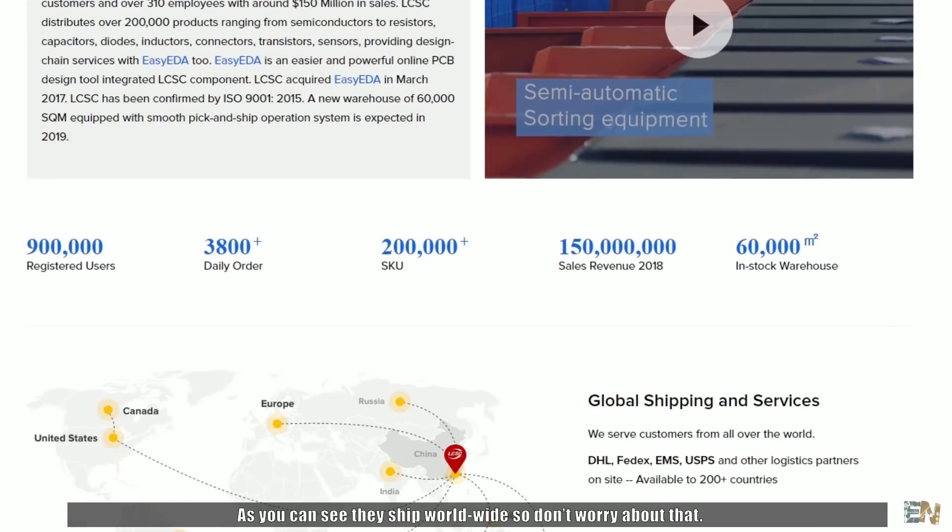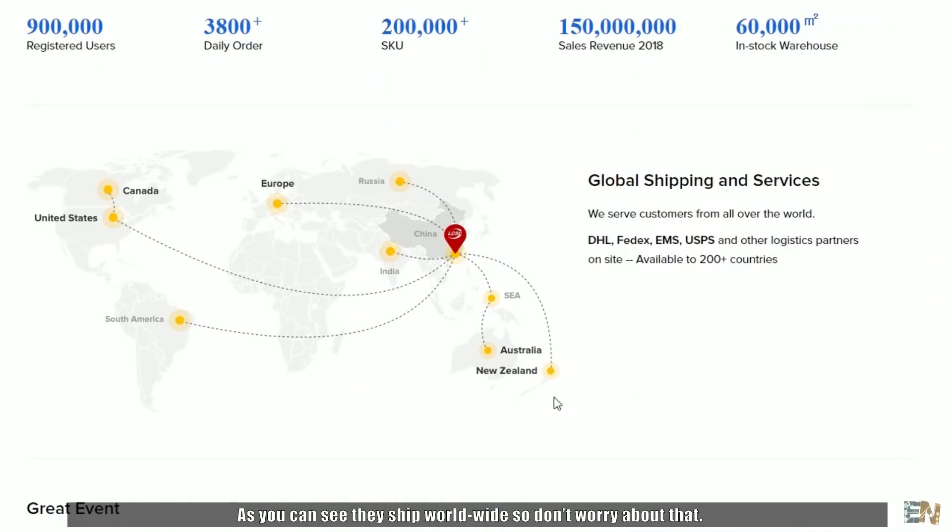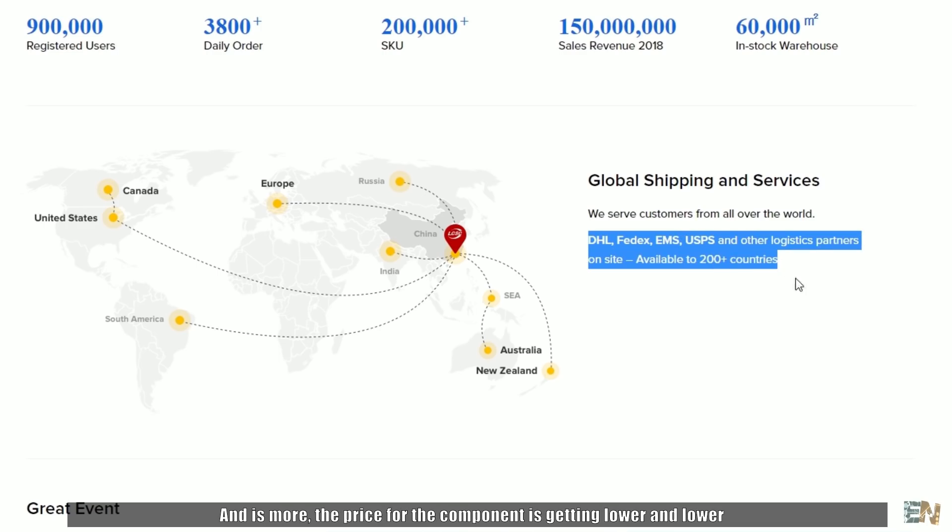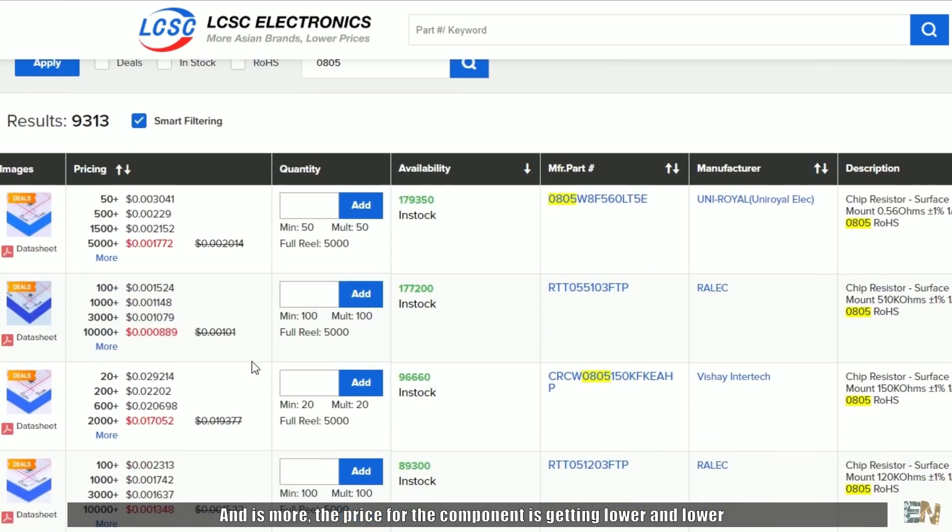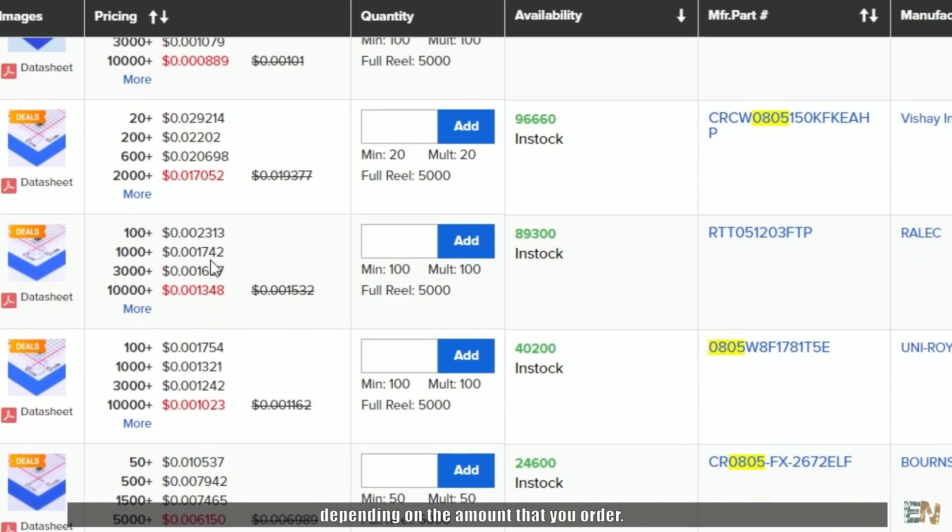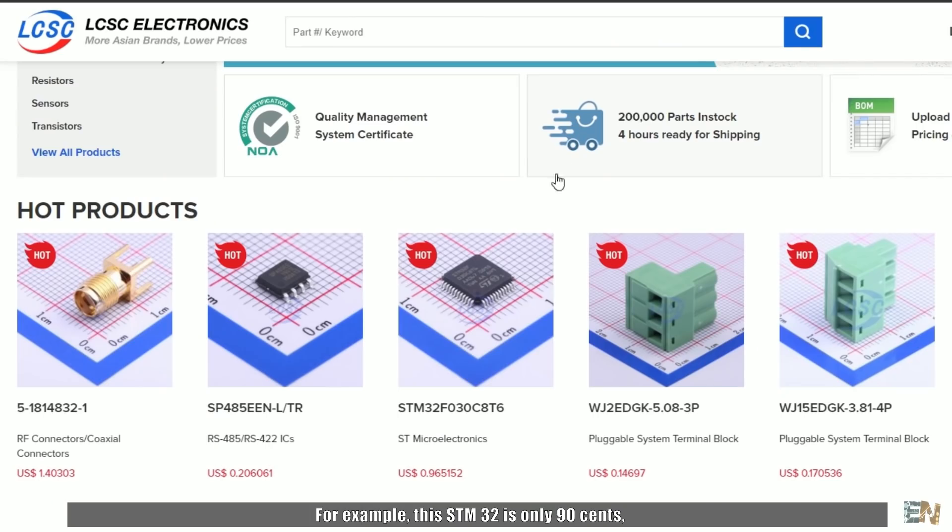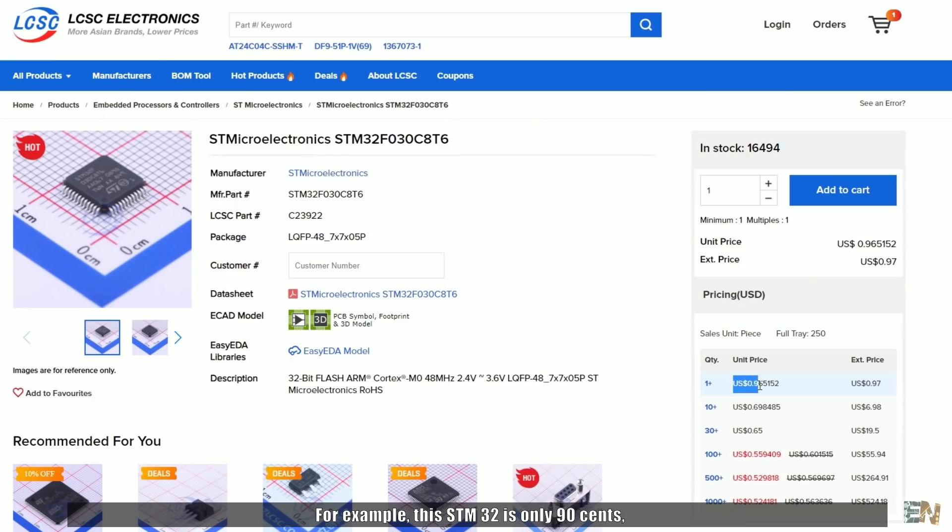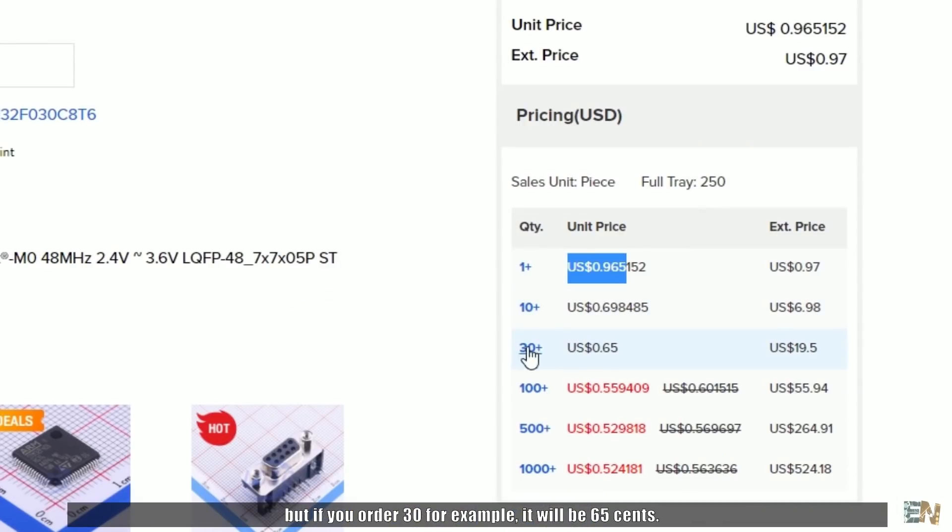As you can see on their website, they can ship worldwide so don't worry about that. And what's more, the price for components will get lower and lower depending on the amount you want to buy. So for example, this STM32 is only 90 cents, but if you order 30, the price will be 65 cents.